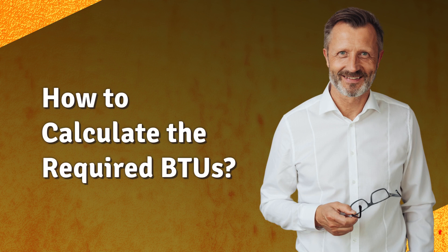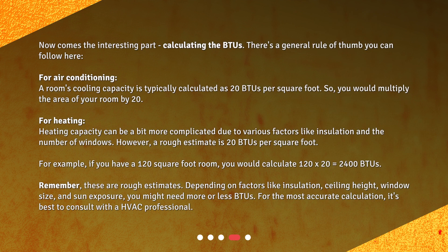How to calculate the required BTUs. Now comes the interesting part: calculating the BTUs. There's a general rule of thumb you can follow here. For air conditioning, a room's cooling capacity is typically calculated as 20 BTUs per square foot, so you would multiply the area of your room by 20. For heating, capacity can be a bit more complicated due to various factors like insulation and the number of windows. However, a rough estimate is 20 BTUs per square foot. For example, if you have a 120 square foot room, you would calculate 120 times 20 equals 2,400 BTUs.